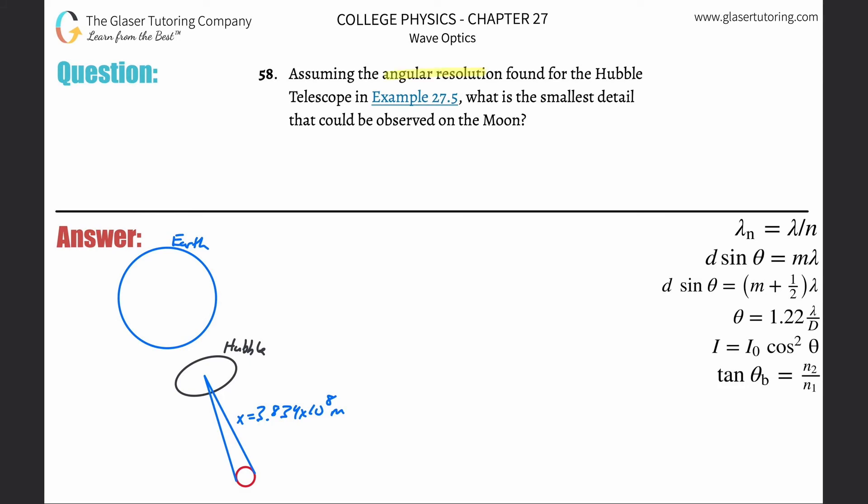Number 58. Assuming the angular resolution found for the Hubble telescope in this example, what is the smallest detail that could be observed on the moon?